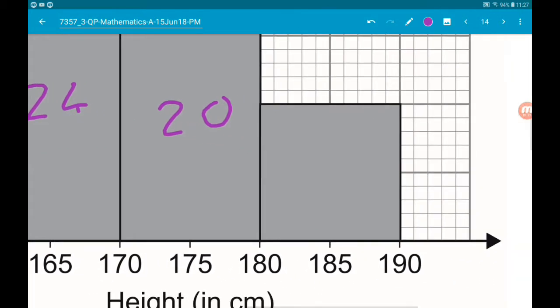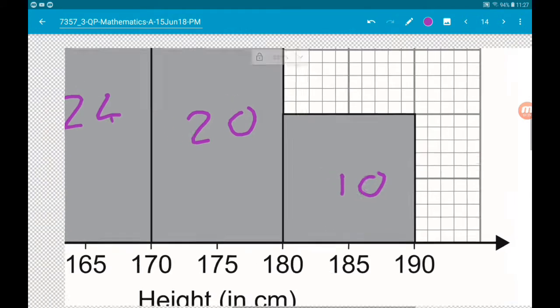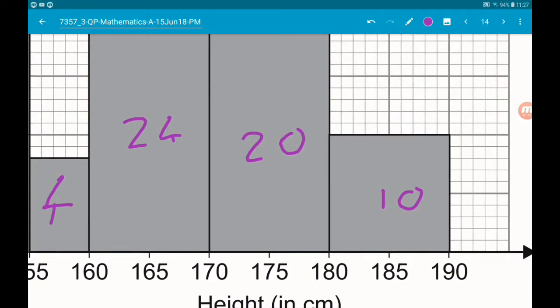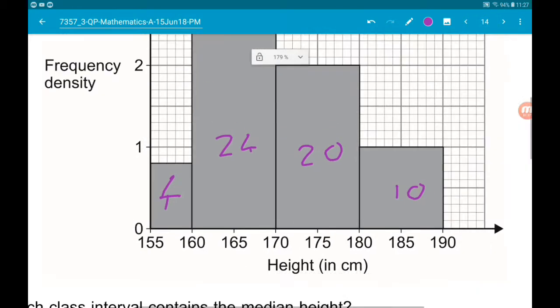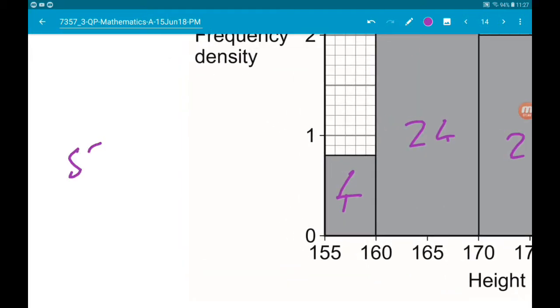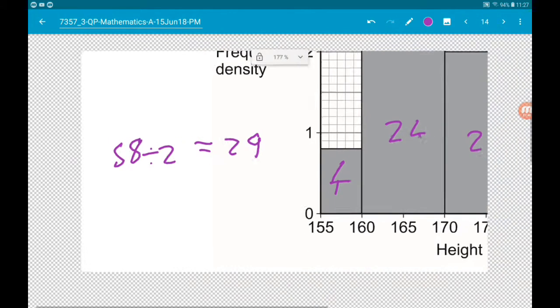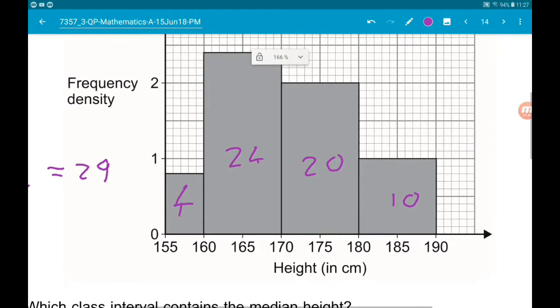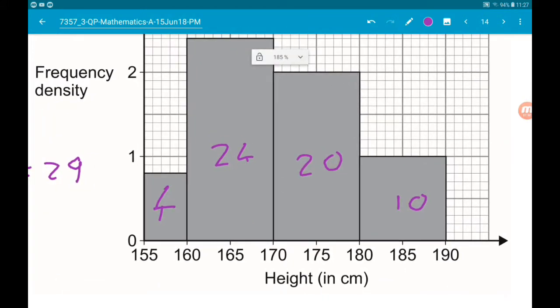So all together, there are 10, 30, 54, 58 students. So 58 divided by 2 is 29. So we need to find the interval, the 29th bit of data.